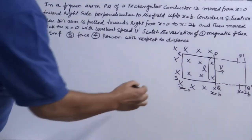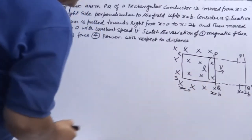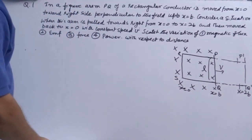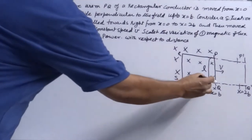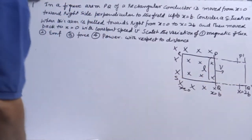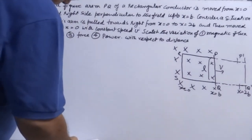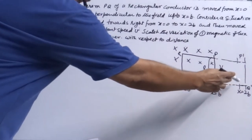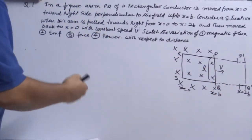When this is moved from X equals 0 to B, the magnetic flux linked with it continuously changes. And then from this to this, this will be constant because it is out of the magnetic field.